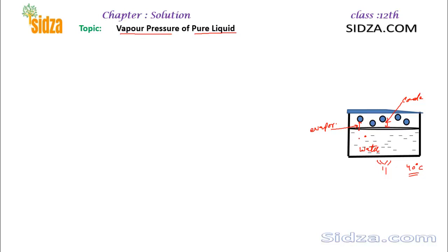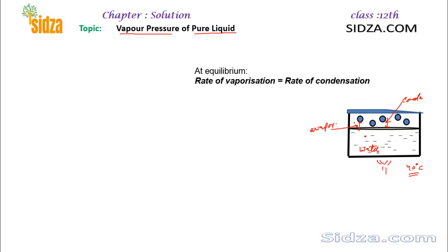Initially the rate of evaporation is quite high and condensation is low because we have very few vapors. But with time, as the concentration of vapors increases, the rate of condensation also increases. A point will be reached when both rates are equal — that is what we call the equilibrium state.